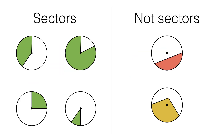Let's quickly cover a key word. Sectors are formed when you have a circle and you draw a radius and another radius. Remember a radius goes from the centre to the circumference. When you've got two of those in a circle, what you create are two sectors. In each case you'll see a green sector and a white sector.